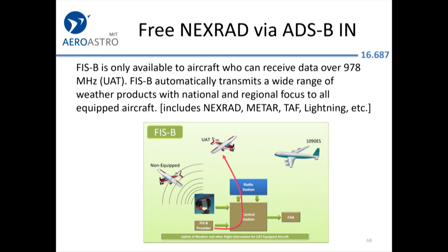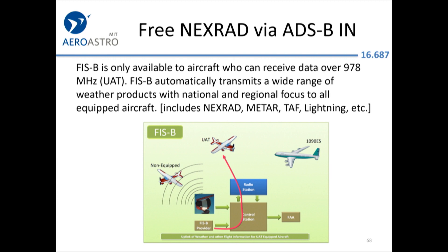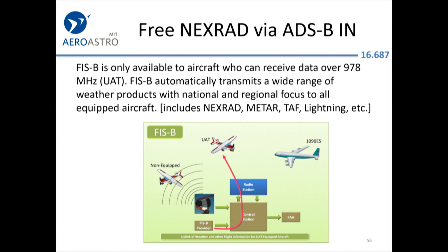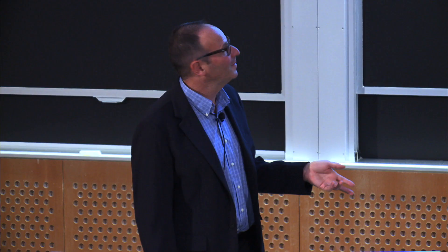Here's a diagram of how it's transmitted. You have to have a UAT receiver to get these data. You see the big airliner transmitting on 1090 MHz extended squitter — but you need to receive on 978 MHz, which is an alternative frequency with more bandwidth, where the FAA can push data up to you: about other traffic, even traffic that doesn't comply with ADS-B. By January 1st of next year, almost everybody will have ADS-B out, at least.